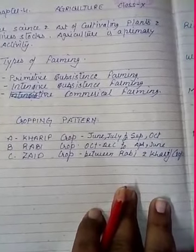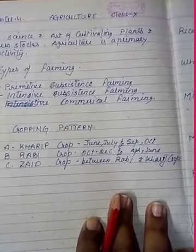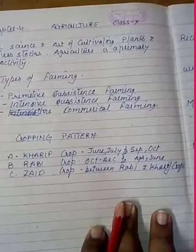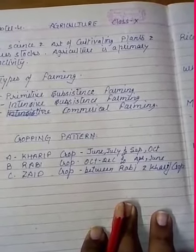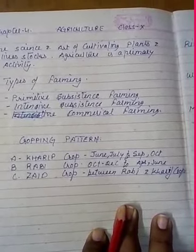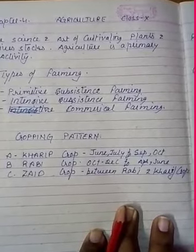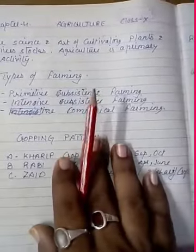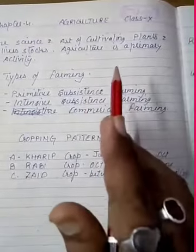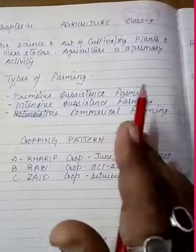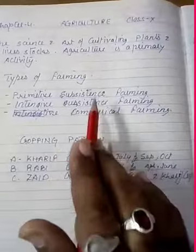Hello, once again myself Ashish Jain in Social Science Geography Chapter 4 Agriculture, one of the most important chapters on which the Indian economy depends. The science and art of cultivating plants and livestock is commonly known as agriculture. Agriculture is also a primary activity which produces most of the food that we consume. Besides food grains, it also produces raw material for various industries.